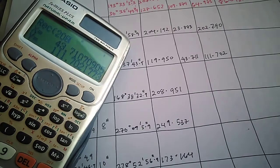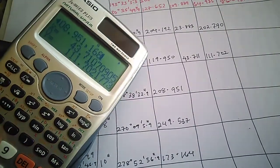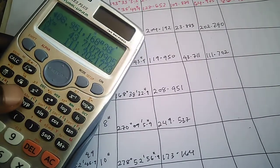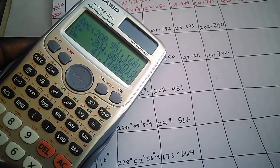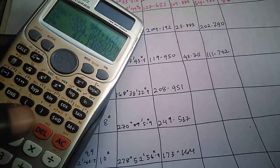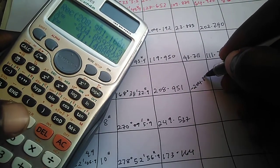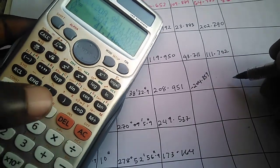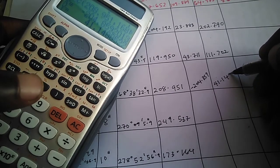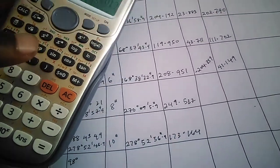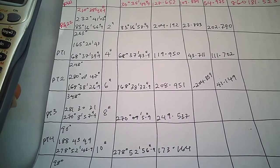On to the next one, we still use the RECT function. We enter a distance of 208.951 and the bearing of 168 degrees 38 minutes 32.9 seconds. We get a negative delta northing here, which is minus 204.859, and our delta easting is 41.149.